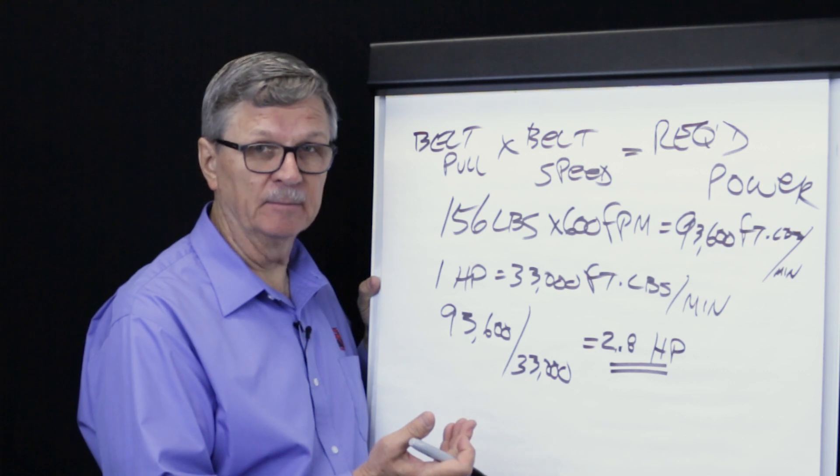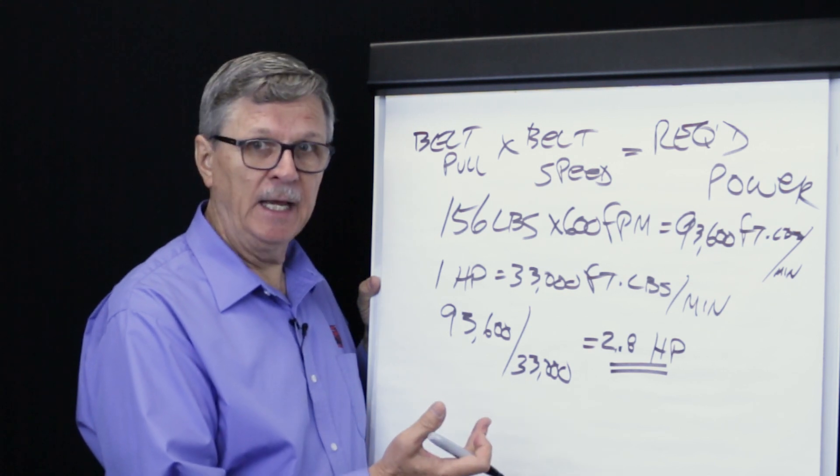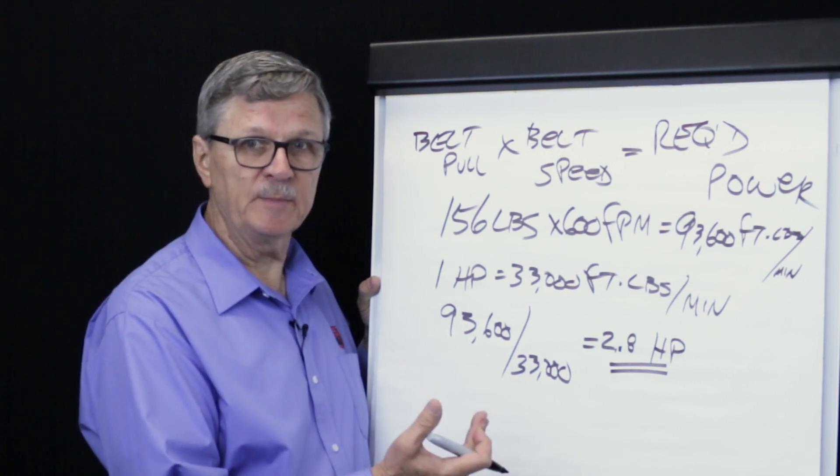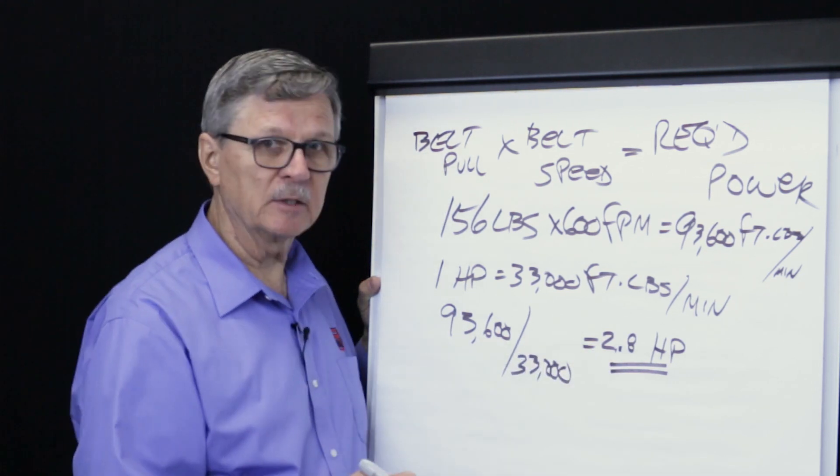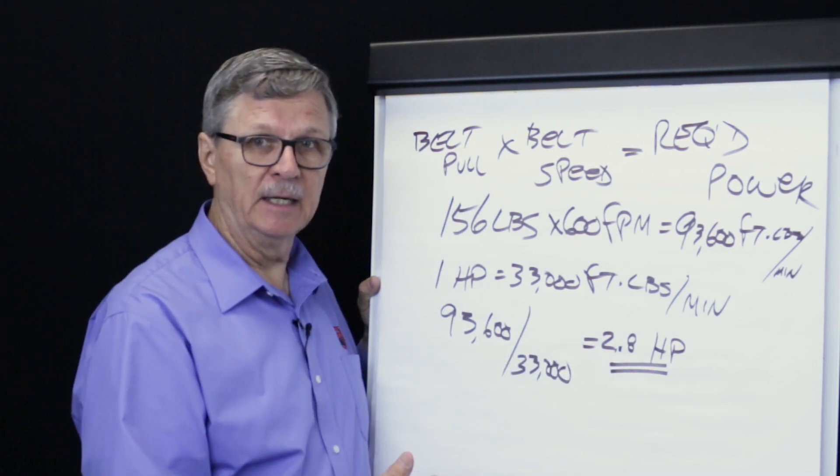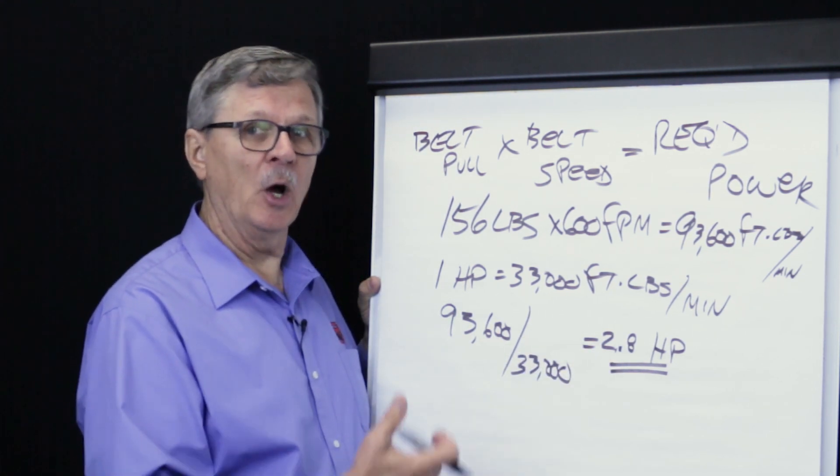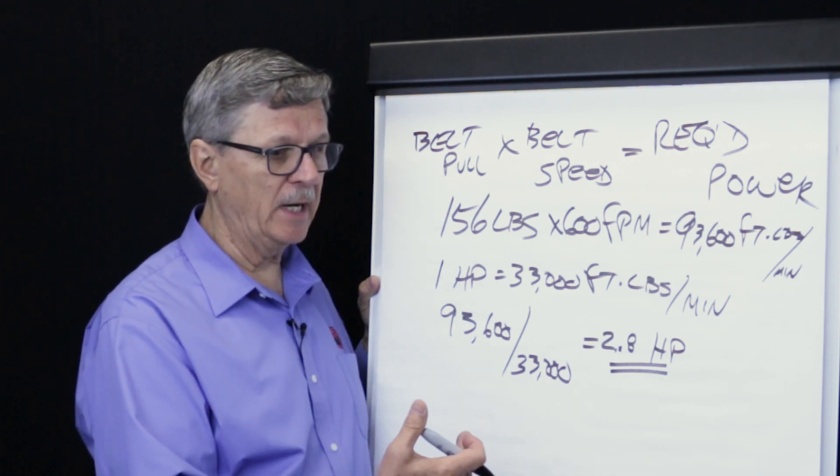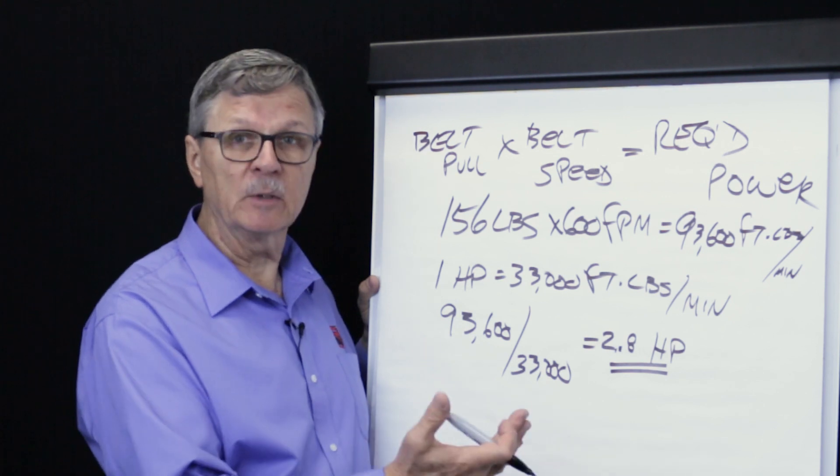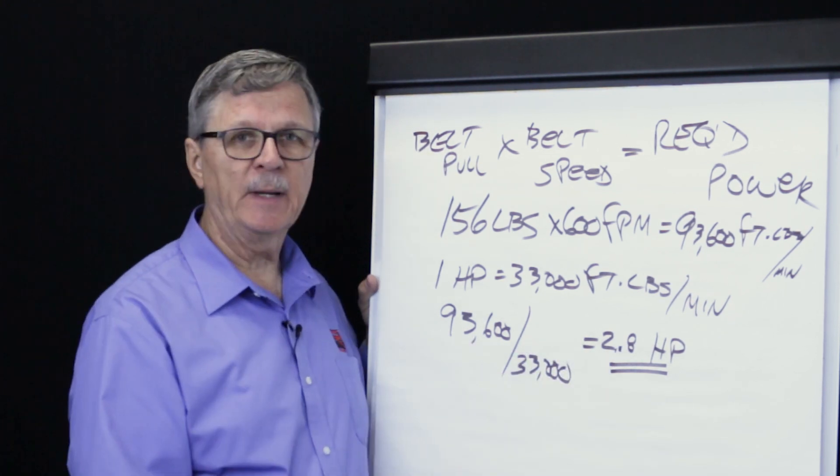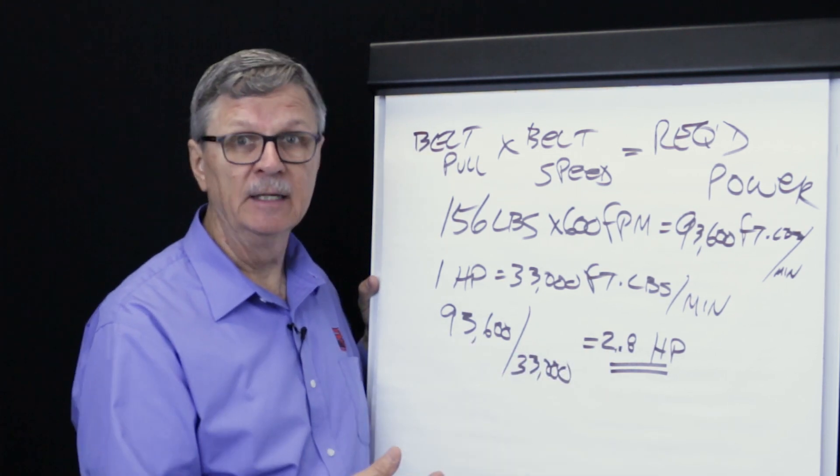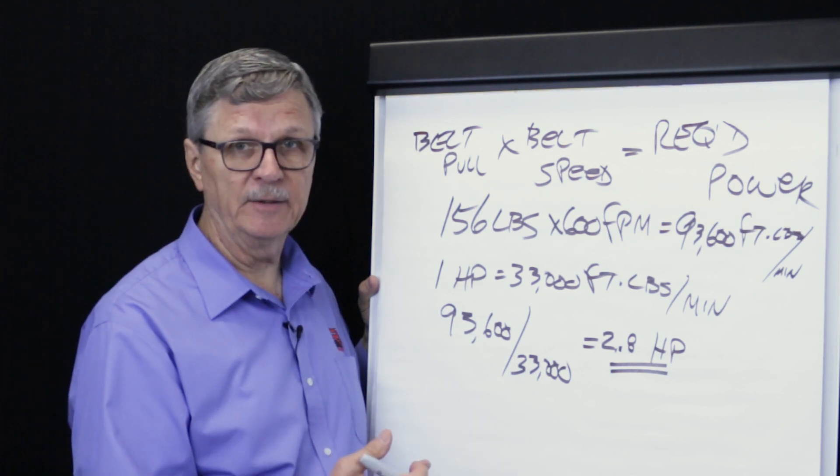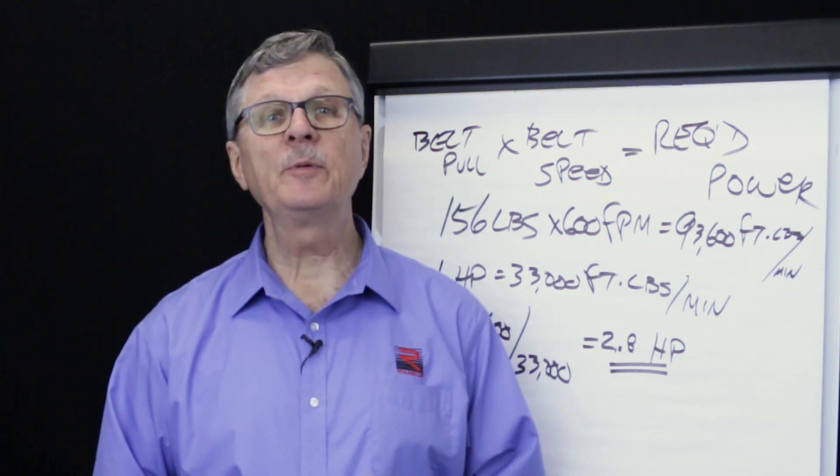So, if our conveyor system was relatively small and the total drive was 10 horsepower, 2.8 horsepower is a significant part of that drive power requirement. On the other hand, if our conveyor is quite long, say requiring a drive value of 300 horsepower, 2.8 horsepower is relatively insignificant compared with the total power required in that system.